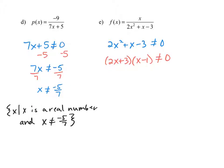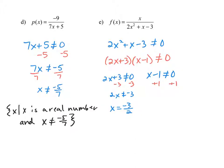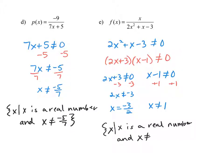Using the zero factor property, 2x plus 3 cannot equal zero and x minus 1 cannot equal zero. Solving each: subtracting 3 from both sides gives 2x cannot equal negative 3, so x cannot equal negative 3 over 2. Adding 1 to both sides of the second factor gives x cannot equal positive 1. So the domain is x such that x is a real number and x cannot equal negative 3 over 2 or x cannot equal 1.